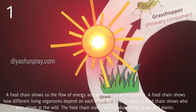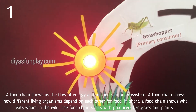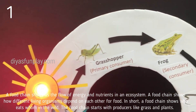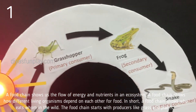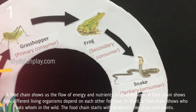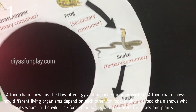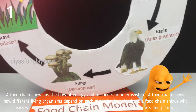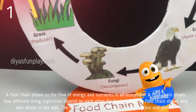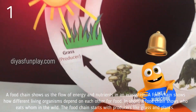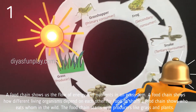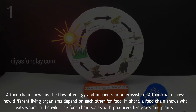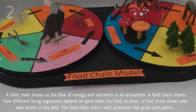A food chain shows us the flow of energy and nutrients in an ecosystem. It shows how different living organisms depend on each other for food. In short, a food chain shows who eats whom in the wild.